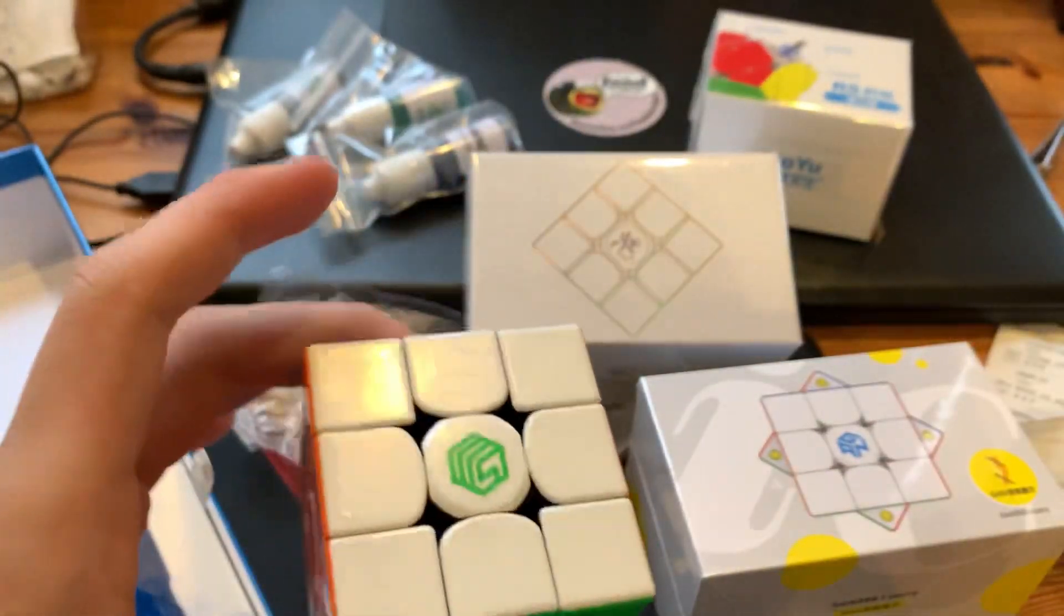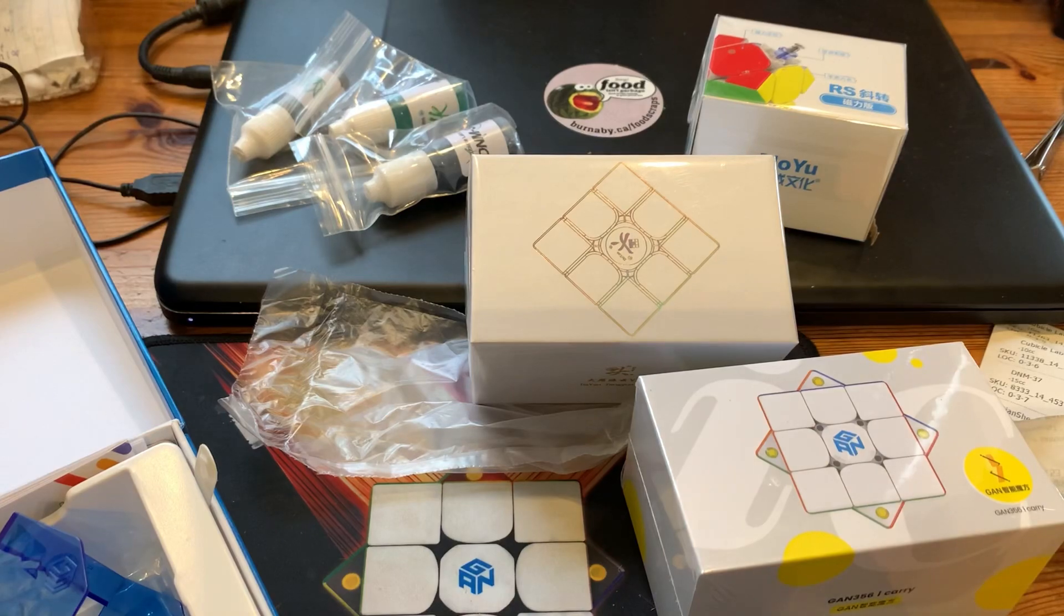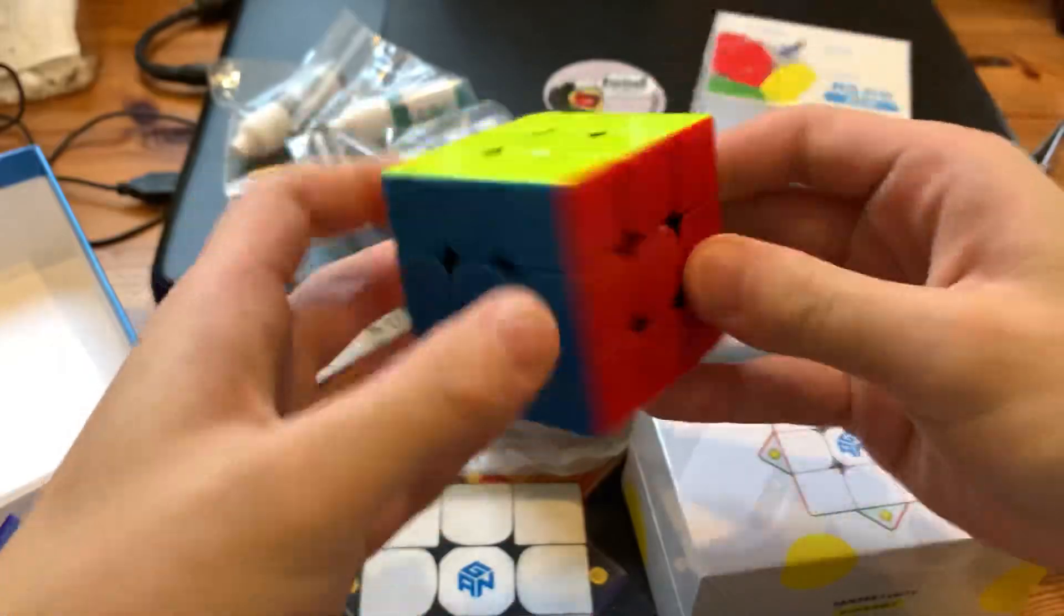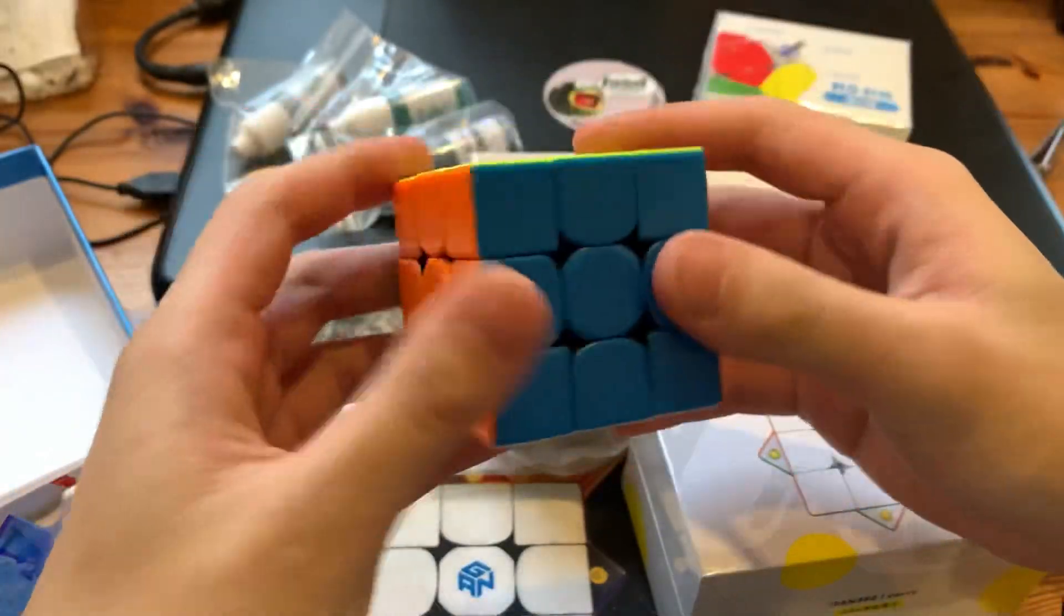Okay, very greasy, sort of disgusting out of the box. Let's wipe it on something. Okay, it's still very disgusting, let's wipe it some more. Okay, it is less disgusting now. Let's see. Okay, it just feels like a GAN, feels like a GAN Air.